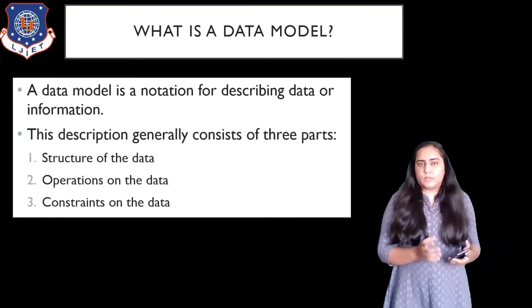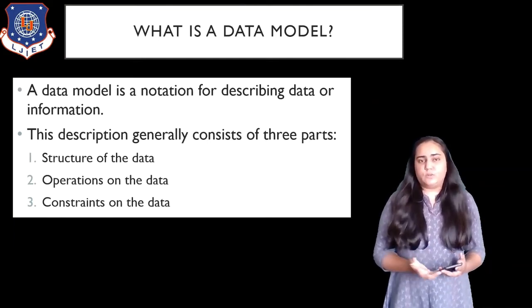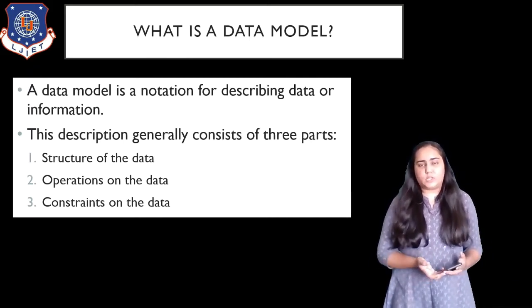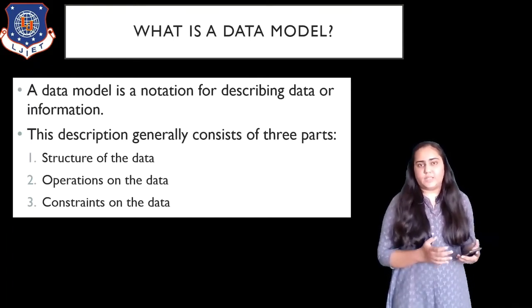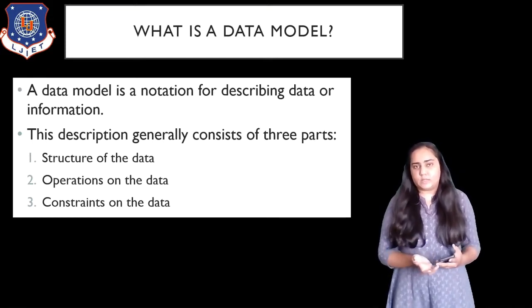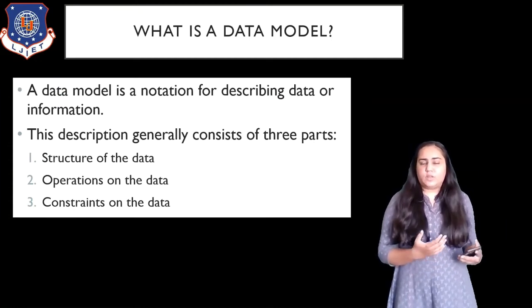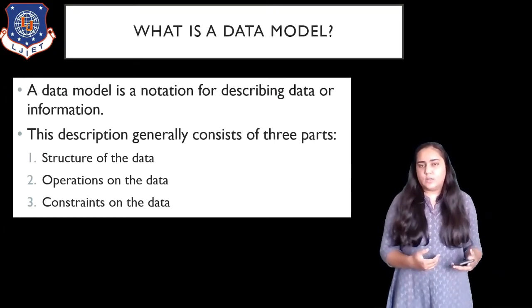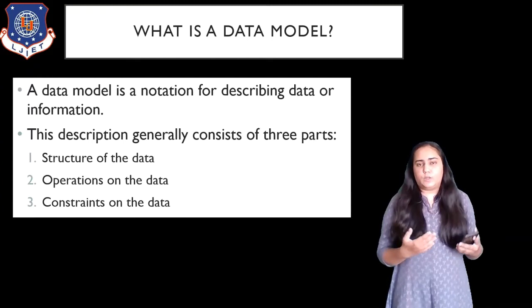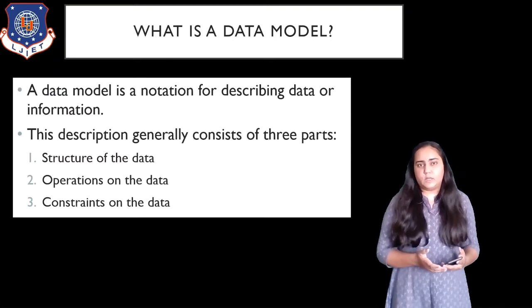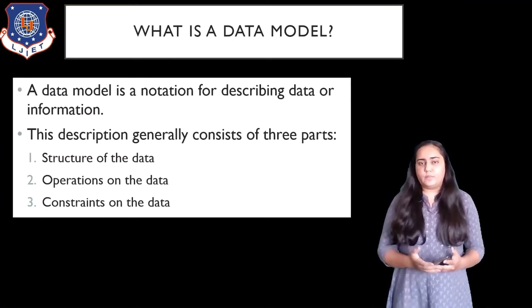The description that the data model gives shows you what the structure of the data is and how the data is related with each other. It also tells you what kinds of operations you can perform on that data and the constraints. Constraints are rules that are applied on the data — they tell you what kind of data you can insert and what kind is not allowed. Those rules which are created are known as constraints, and all these things are represented in a diagram using a data model.